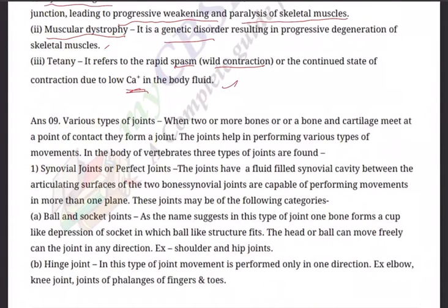Question nine: Various types of joints. When two or more bones, or a bone and cartilage, meet at a point of contact, they form a joint. Joints help in performing various types of movements in the body of vertebrates. Three types of joints are found. First: synovial joints — these are perfect joints that have a fluid-filled synovial cavity with synovial fluid between the articulating surfaces of two bones, capable of performing movements in more than one plane.